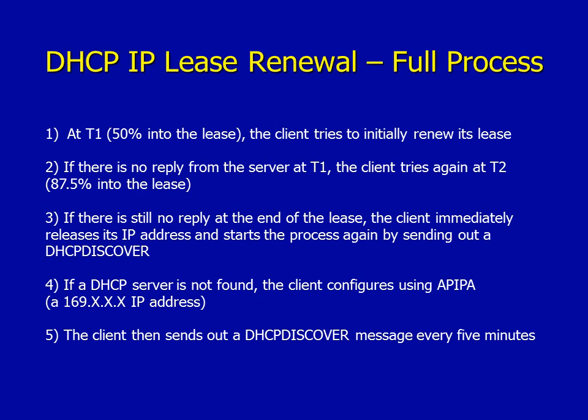Now we're going to consider DHCP IP lease renewal. There are five stages. The first is known as T1: at 50% into the lease the client tries to initially renew. For example, if our lease time is 60 minutes, at 30 minutes the client will try to renew at T1. Stage 2: if there's no reply from the server at T1, the client tries again at T2, which is 87.5% into the lease.